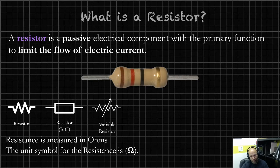Resistance is measured in ohms, and we use the unit symbol omega to identify resistance when we're talking about ohms in a circuit. So how do resistors work?